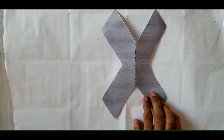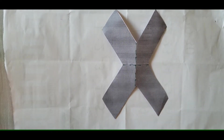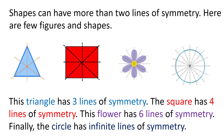Here are a few more pictures having more than two lines of symmetry. The triangle shown here has three lines of symmetry. The square has four lines of symmetry. This six-petal flower has six lines of symmetry. And finally, the circle has infinite lines of symmetry.